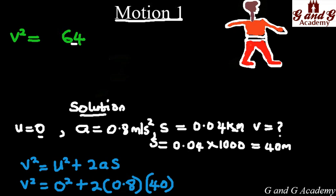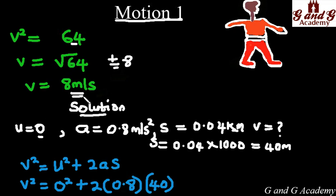Now you can find the square root of 64, which gives you plus or minus 8. But we don't need the minus, we need the positive. So your answer is 8 meters per second.